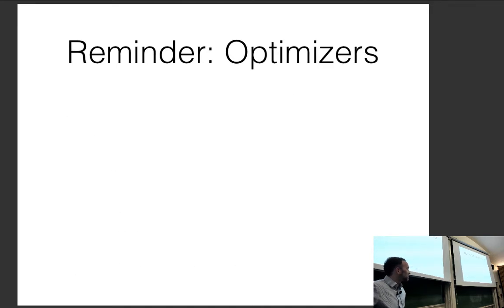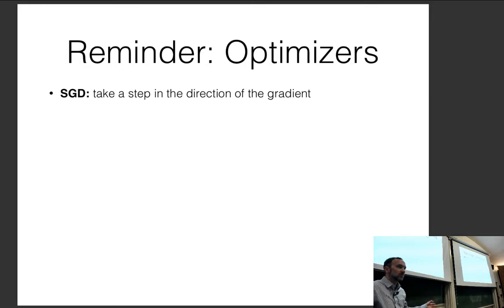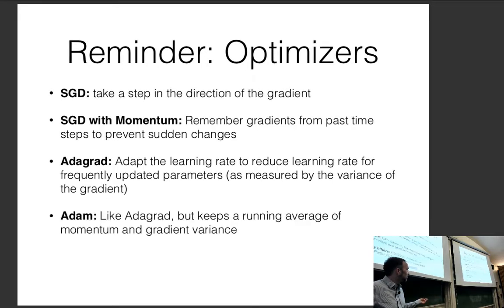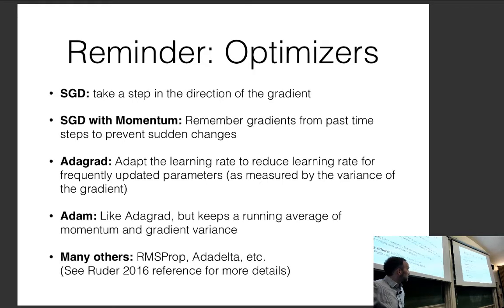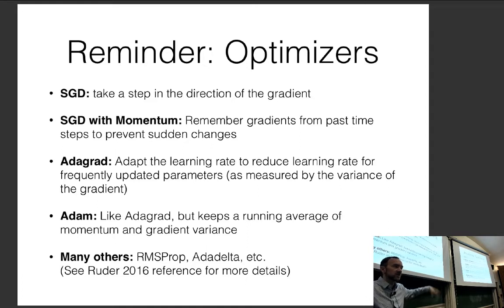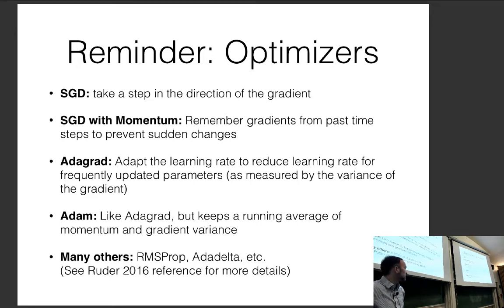There are many optimizers — SGD, SGD with momentum, Adagrad, Adam, and many others. Some are easier to optimize than others. SGD is a little bit less easy to optimize than Adam, because Adam has built-in tricks to control the size of the gradients regardless of what learning rate you choose.